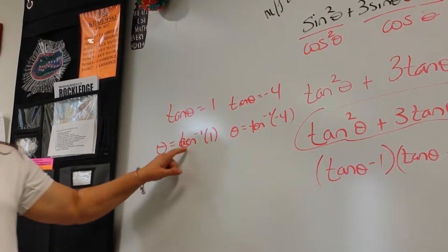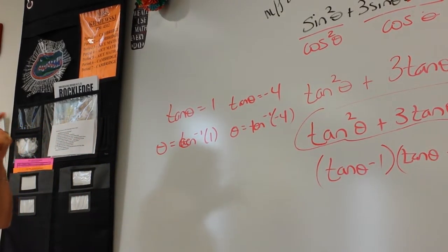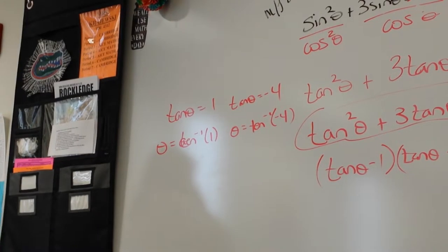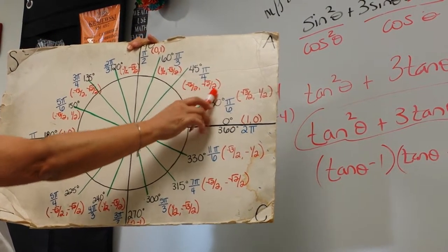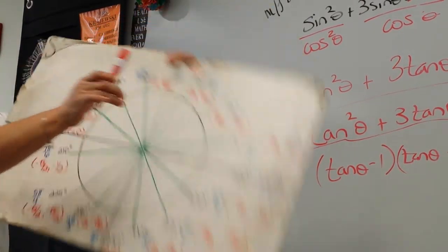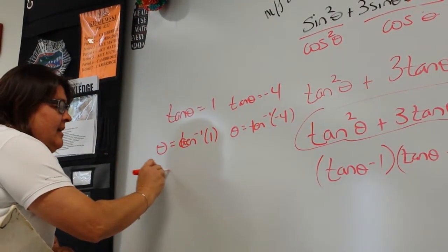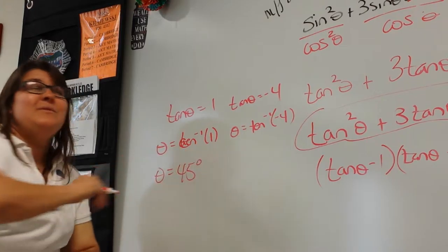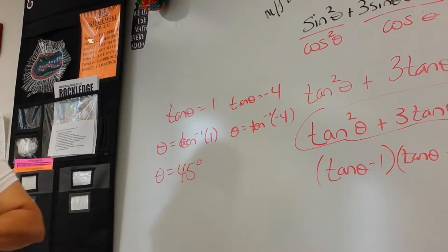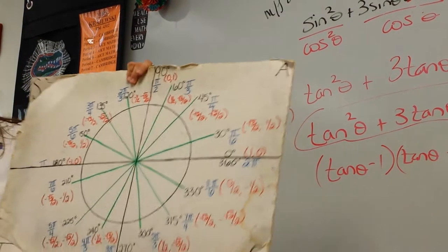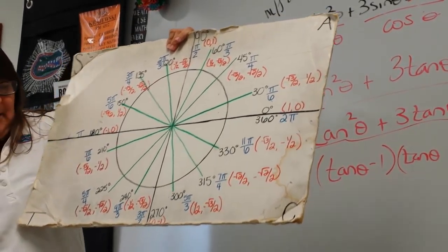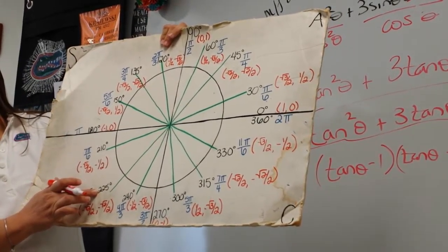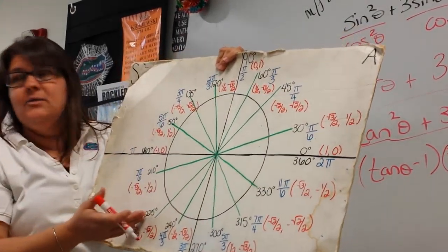Tan to the negative one of one should be an easy one — 45 degrees. Because that's where sine and cosine are the same: when you divide by the same thing you get one. So 45 makes perfect sense. If it were 0 to 360, the next answer would be 225 — 180 degrees away.